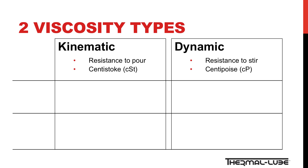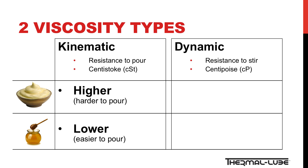Most of the time, when we see viscosity grades, they are referring to kinematic viscosity. Let's look at a familiar example: mayonnaise versus honey. If we try to pour mayonnaise and honey, which one will pour easier? The honey, right? So mayonnaise has a greater resistance to pour than honey, and therefore a higher kinematic viscosity.